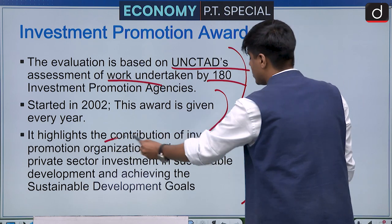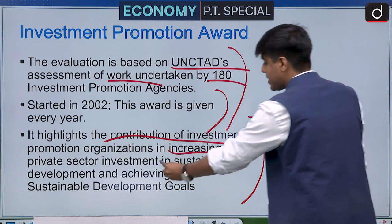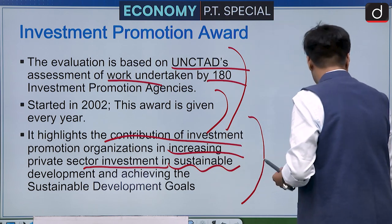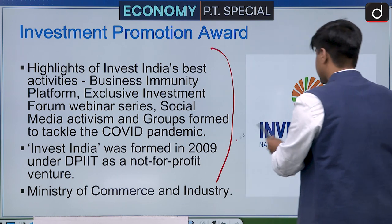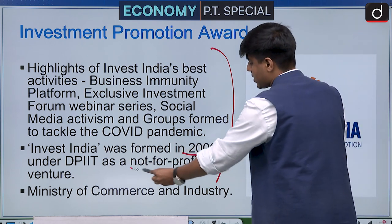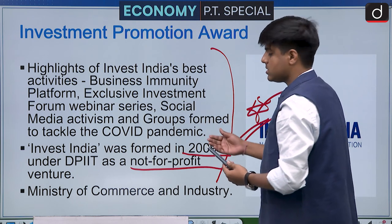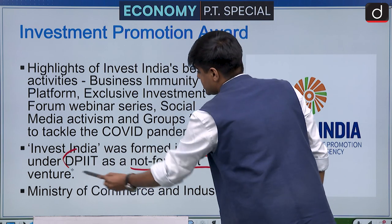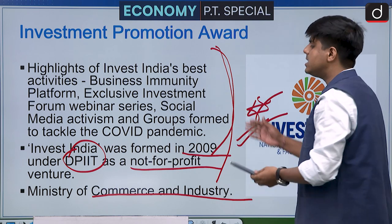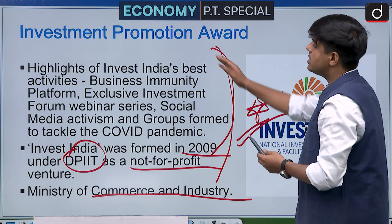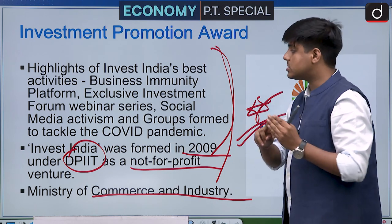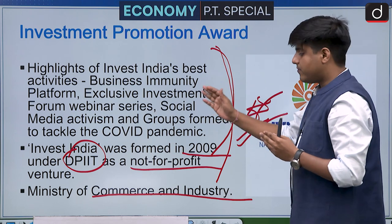The award highlights the contribution of investment promotion organizations in increasing private sector investment in sustainable development and achieving the SDGs. Invest India was formed in 2009 as a not-for-profit investment promotion agency under DPIIT, which works under the Ministry of Commerce and Industry. The key facts to remember: the award is given by UNCTAD, and Invest India functions under DPIIT.